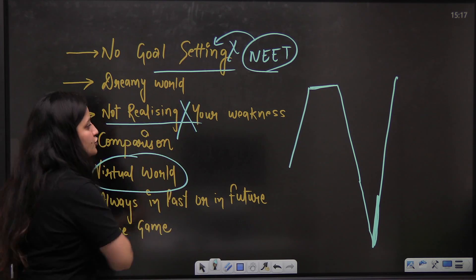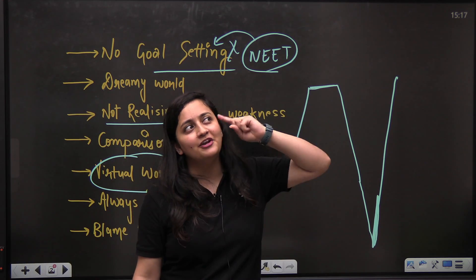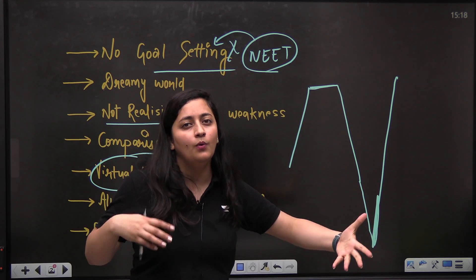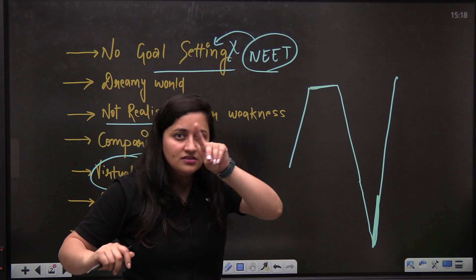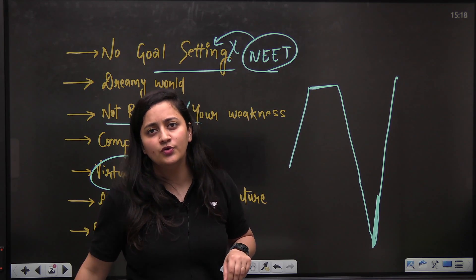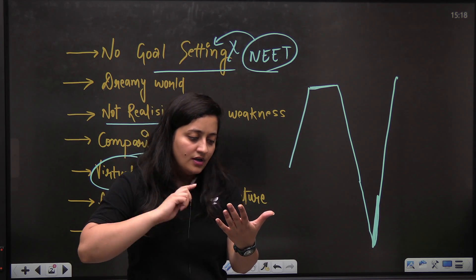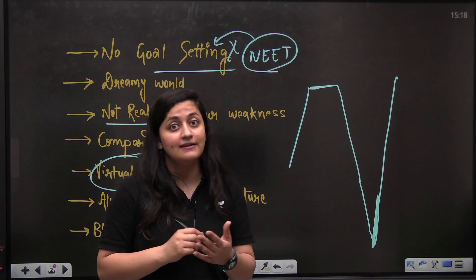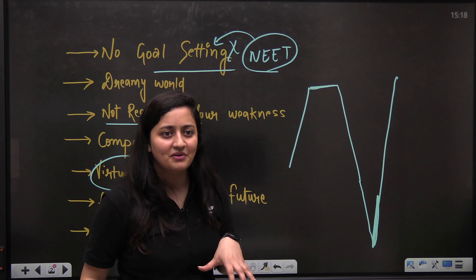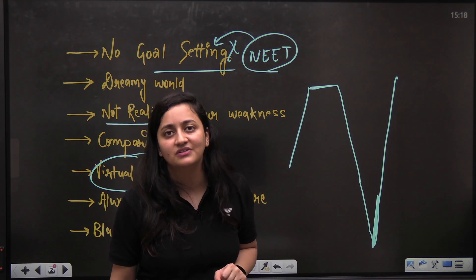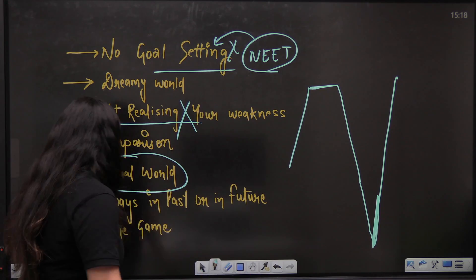And then your virtual world. One is your dreamy world where you are thinking I'll do this, I'll do that. I know my strength. Even I will start in the last two months, I'll be able to score that much. This is the dreamy world. Second is the virtual world. Instagram, YouTube. We think that we have started the lecture, but all of sudden we will get another notification and we will be deviated. This is what you people do to yourself. Stop doing it.